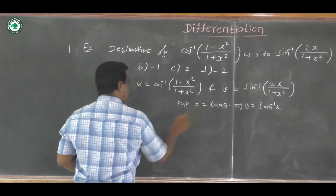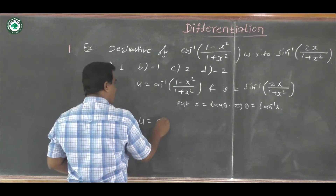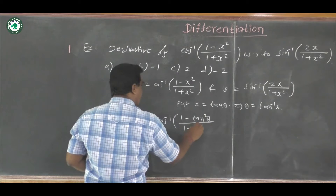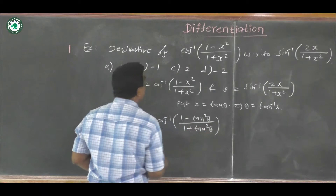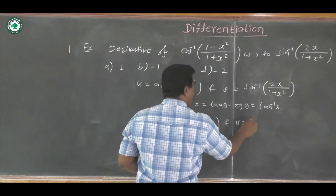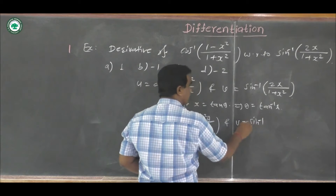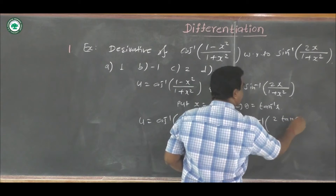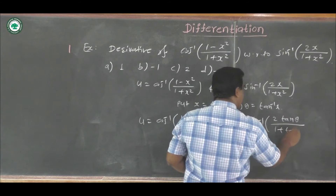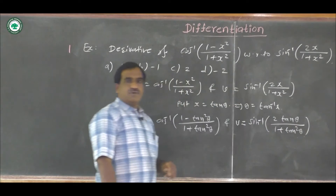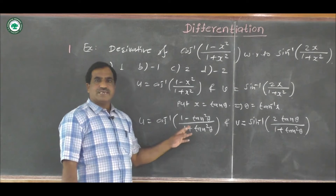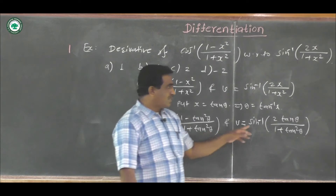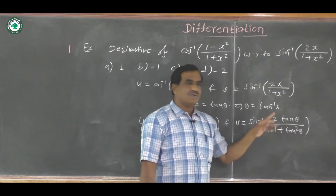Using this substitution, we can write u equal to cos inverse of (1 minus tan square theta upon 1 plus tan square theta) and v equal to sin inverse of (2 tan theta upon 1 plus tan square theta). We have two known formulas: cos 2 theta equals (1 minus tan square theta upon 1 plus tan square theta), and sin 2 theta equals (2 tan theta upon 1 plus tan square theta).